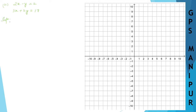Let me take the first equation: 2x minus y is equal to 2. Transfer y to the other side — it will be 2x is equal to 2 plus y. So x is equal to 2 plus y divided by 2.